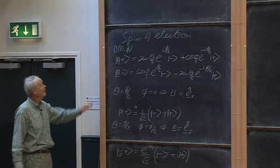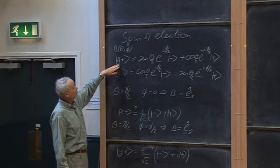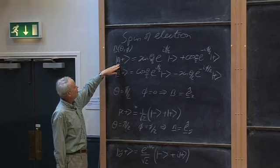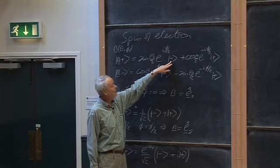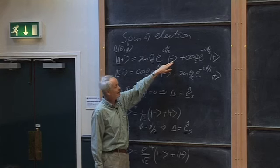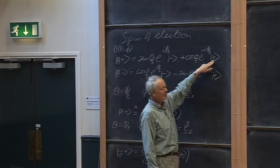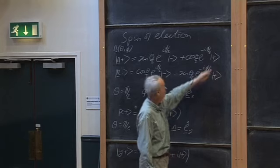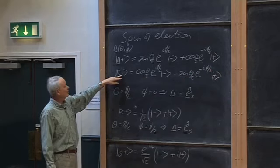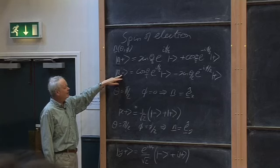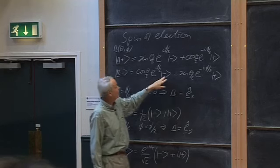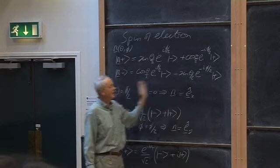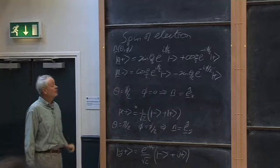With that health warning, the state in which you're certain to measure spin plus a half in the direction n is this linear combination of the state in which you're definitely going to get minus a half along the z axis and the state in which you will definitely get plus a half along the z axis. Similarly, the state in which you're definitely going to get minus a half along the n direction is another linear combination of those same two states of well-defined spin along the z axis.